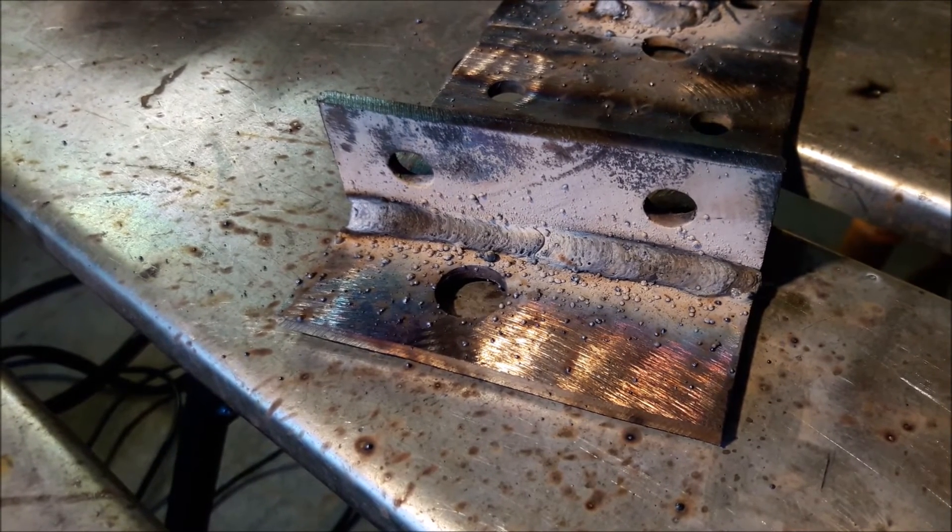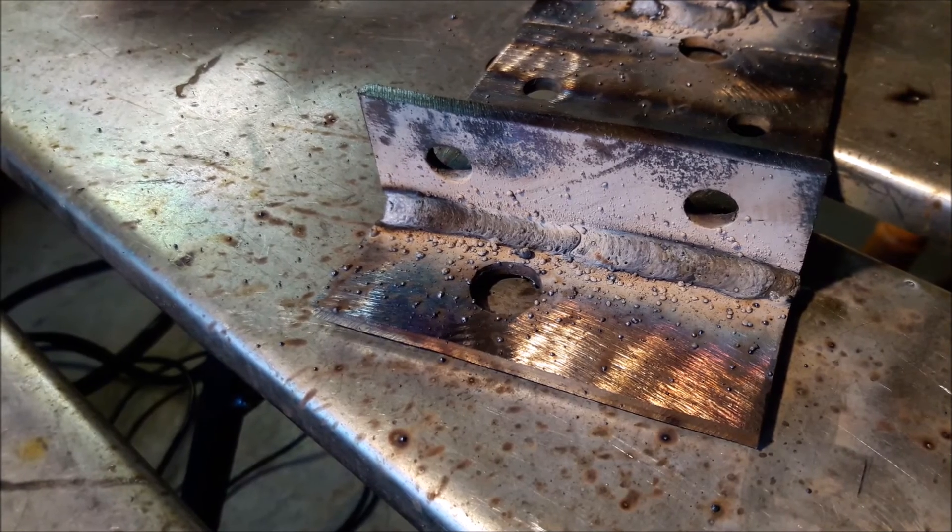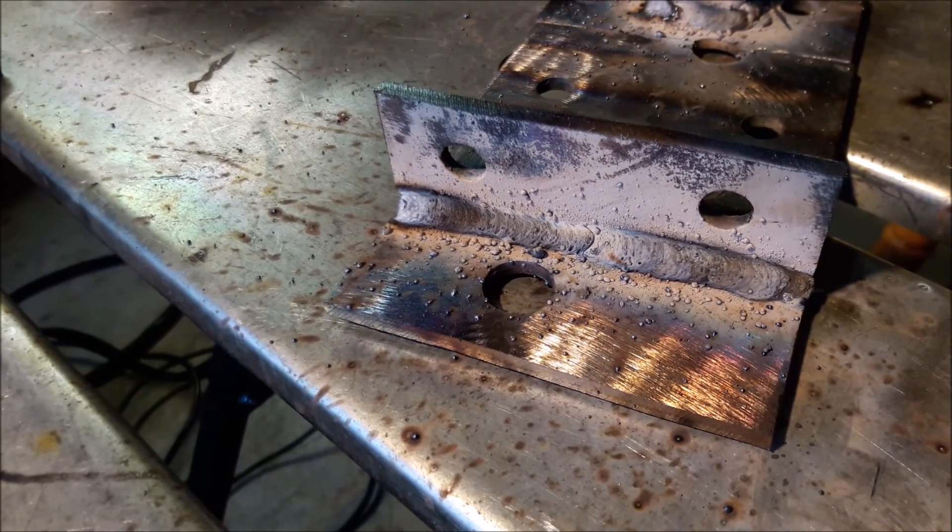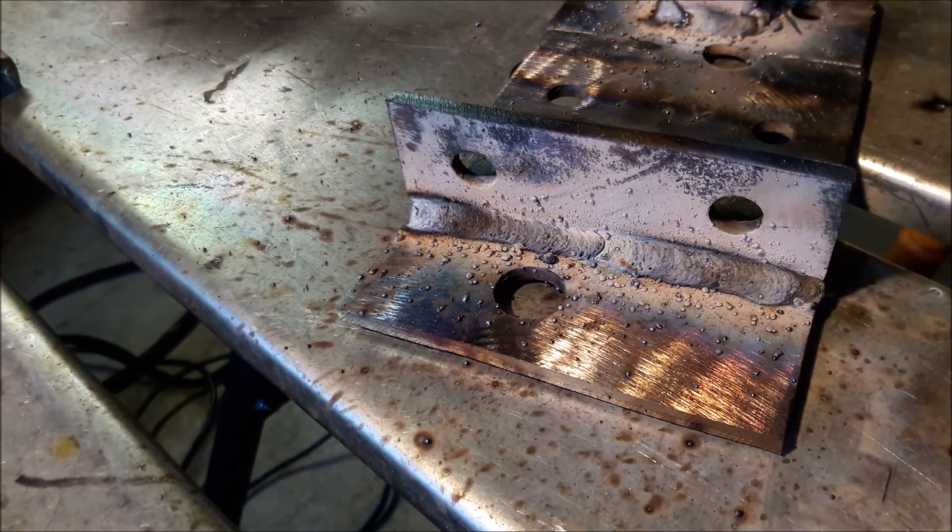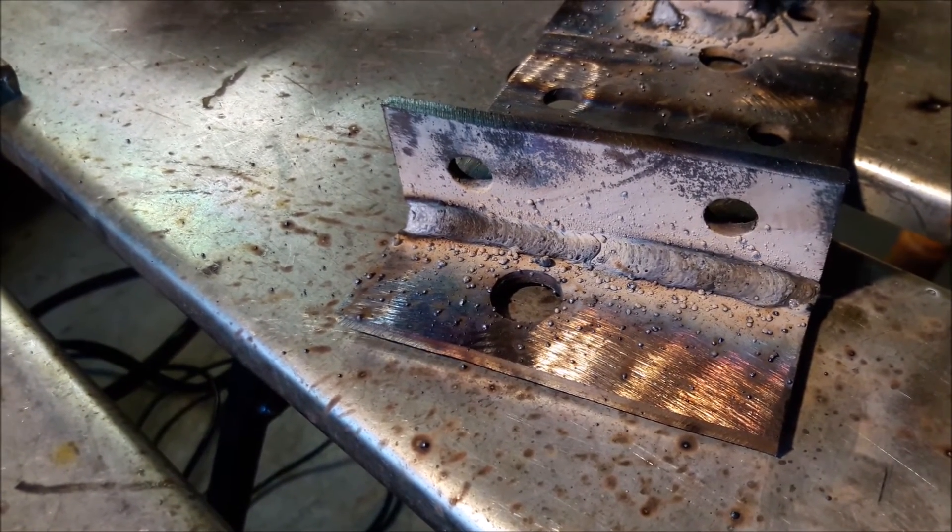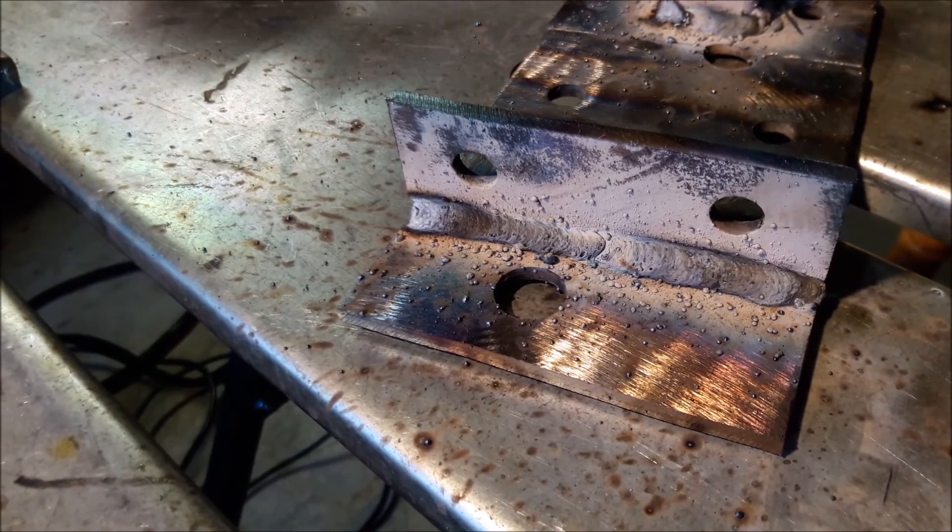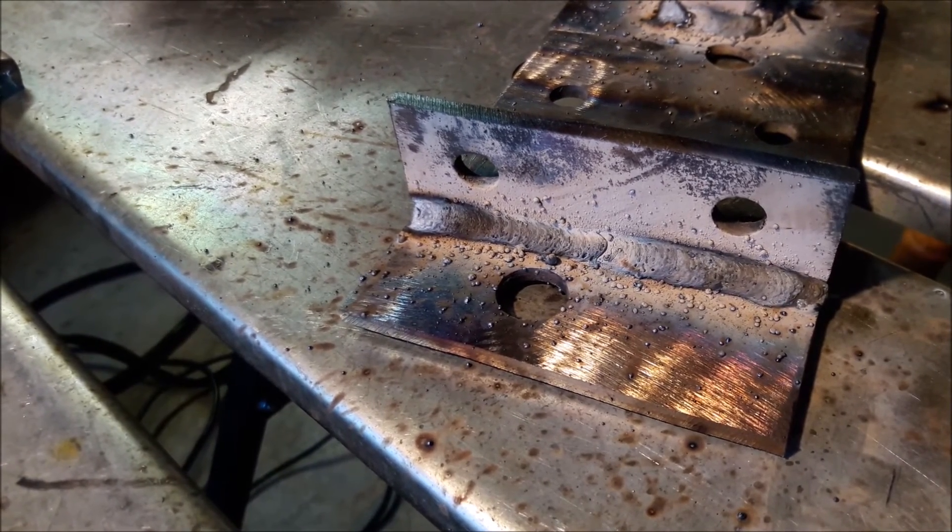Some of you first-time flux core welders may look at that and go, that's a pretty shitty weld, but you'll see that a quick pass with the wire wheel cleans it right up. All those little balls and smoke, that's the spatter I was talking about, and that is 100% normal for your flux core weld.